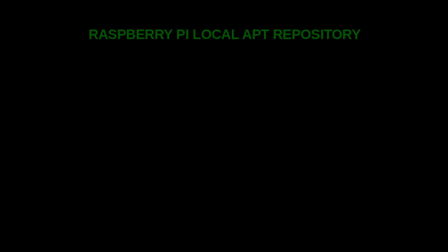When you update the operating system of the Raspberry Pi, or any Linux system, you go through a series of commands. For example, on the Raspberry Pi it's apt-get update, apt-get upgrade, and apt-get distribution-upgrade.